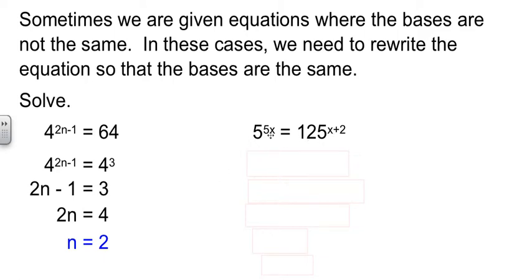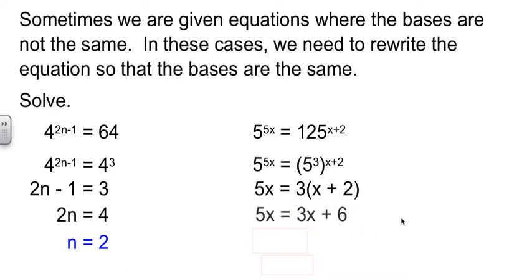Same idea is going to come into play over on this one. We have 5 to the 5x and we have 125 to the x plus 2. Bases aren't the same. But if we do a little bit of inspection, we find out that 125 is 5 to the 3rd. Notice what we did. We changed the 125 into a base of 5 so that we have something to work with that has the same base. Now, when those bases cancel out, we get 5x on this side. And over here, we have 3 times this power out here. So, 3 times that. Distribute the 3. Subtract 3x. Divide by 2. And we find out that x equals 3.